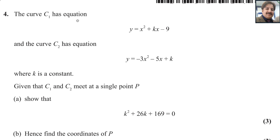The curve C1 has the equation y equals x squared plus kx minus 9, and the curve C2 has the equation y equals minus x squared minus 5x plus k, where k is a constant. Given that C1 and C2 meet at a single point P, show that k squared plus 26k plus 169 equals 0.